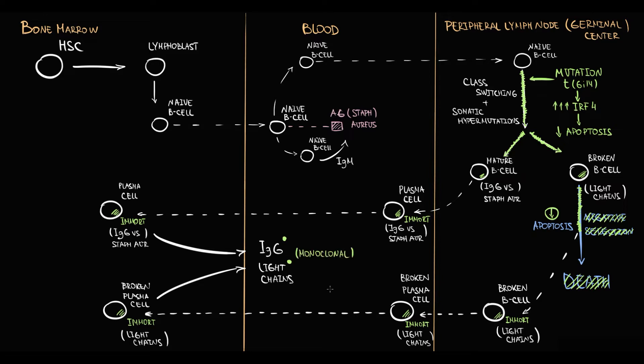The specific feature of mutated plasma cells is that they cannot change the type of immunoglobulin that they produce. Moreover, they cannot modify this immunoglobulin against any other bacteria or virus. So they are perpetually doomed to produce just broken immunoglobulins with only light chains, or to produce only immunoglobulin G, for example. And because all immunoglobulins that malignant plasma cells produce are just copies of each other, such immunoglobulins are called monoclonal immunoglobulins.